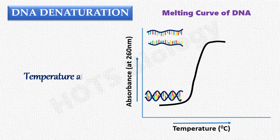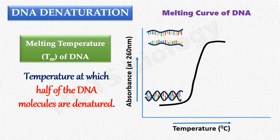The temperature at which half of the DNA molecules are denatured is called the melting temperature of DNA. That means at this temperature, half of the DNA molecules present in the solution will be single-stranded, and the other half will be double-stranded. The melting temperature is found at the midpoint of the melting curve.